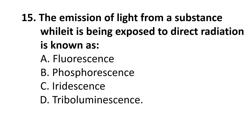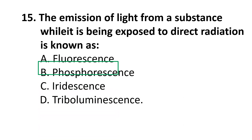Question 15: The emission of light from a substance while it is being exposed to direct radiation is known as: A) Fluorescence, B) Phosphorescence, C) Iridescence, D) Triboluminescence. The correct answer is A) Fluorescence.